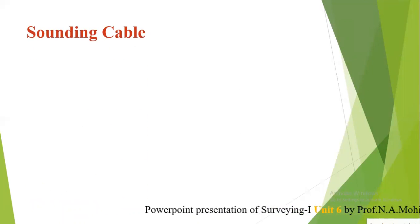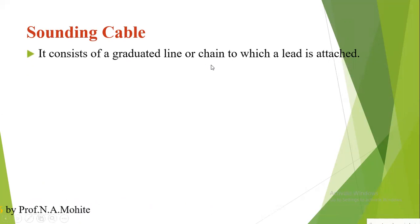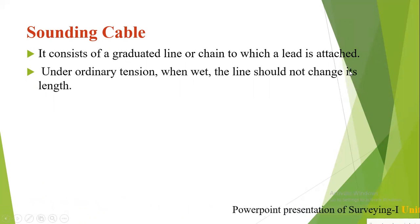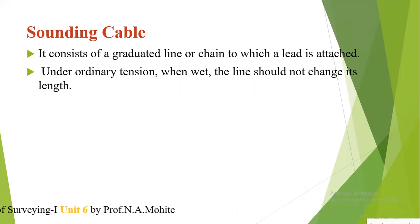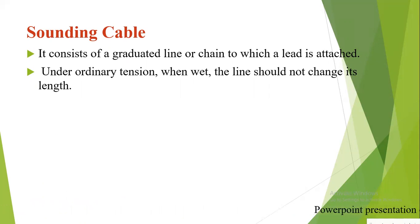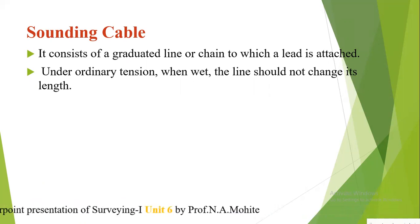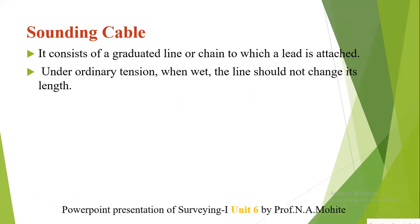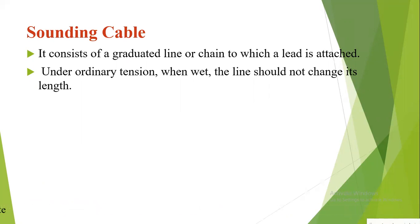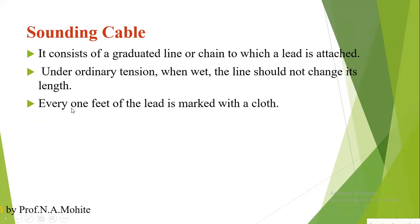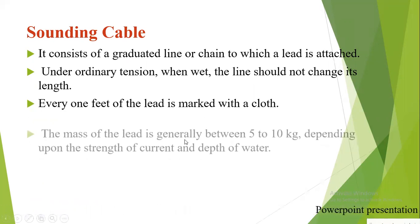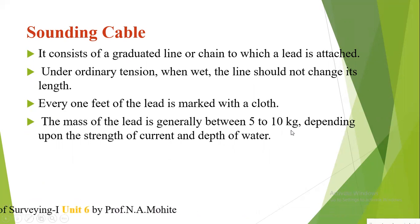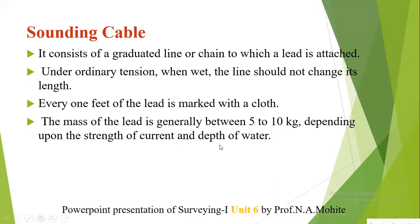Next is the sounding cable, also called the lead line. It consists of a graduated line or chain to which a lead has been attached. When the depth of water is more than two or three meters and the water current is high, the sounding rod is not practicable. In such a case, a cable or rope is released slowly from a boat by means of a pulley system. The cable should not change its length when wet, and every one foot of the lead is marked with cloth. The mass of the lead is generally between 5 to 10 kg, depending upon the strength of the current and the depth of the water.